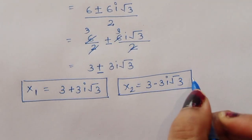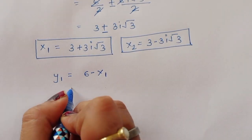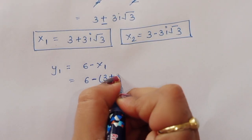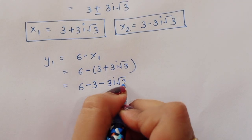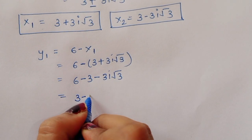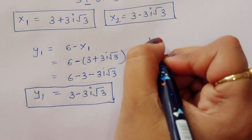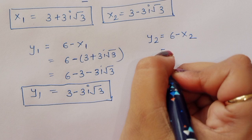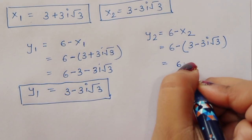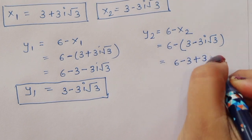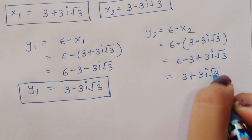Now finding y1 and y2 using equation 3 (y equals 6 minus x). y1 equals 6 minus x1, which is 6 minus (3 plus 3i square root of 3), giving y1 equals 3 minus 3i square root of 3. Similarly, y2 equals 6 minus x2, which is 6 minus (3 minus 3i square root of 3), giving y2 equals 3 plus 3i square root of 3.